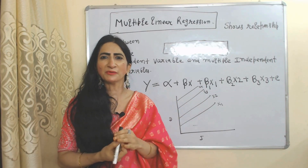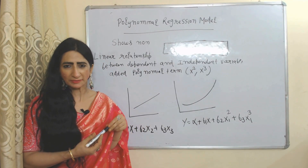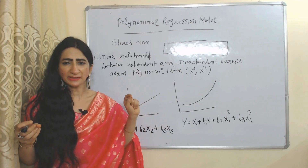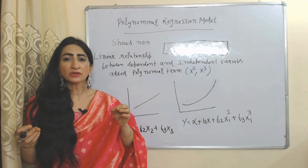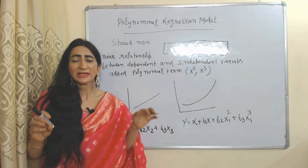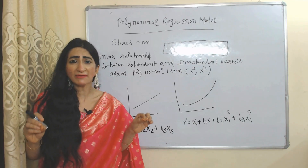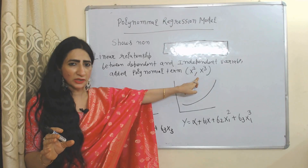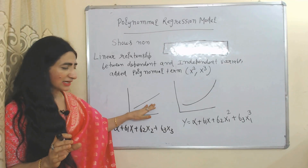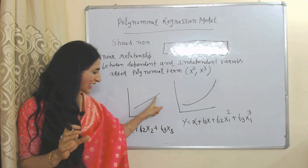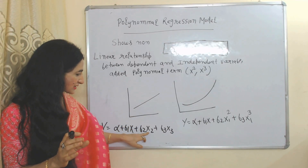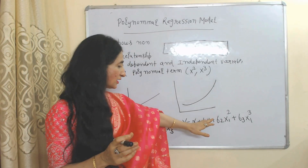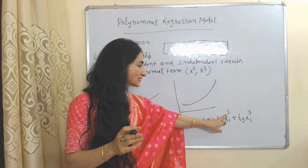Simple linear and multiple linear regression models show a linear relationship between dependent and independent variables. But polynomial regression model shows a nonlinear relationship between dependent and independent variables. In polynomial regression, we use polynomial terms like X squared and X cubed. In simple linear regression, the diagram is represented by a straight line with no squared or cubed terms, whereas the polynomial regression diagram uses polynomial terms like X square and X cube.